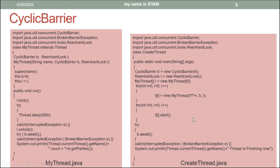We already have seen this code in the previous video. We are creating 5 new threads and passing the reference of type CyclicBarrier, which takes 6 threads to trip, and we are passing the reference variable of type ReentrantLock. The names of the threads will be t0 to t4. After that we are starting all the 5 threads. In the run method of all 5 threads, we have a lock and unlock, and in between the threads are sleeping for 500 milliseconds.